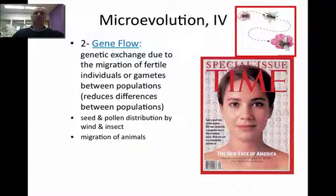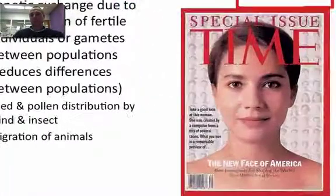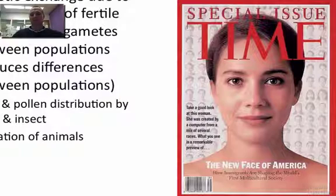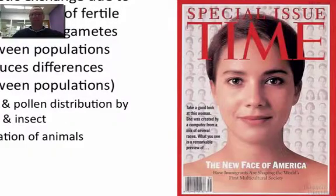The next thing is gene flow. Gene flow simply happens when animals migrate in and out of the population and they carry their alleles with them or not. There's a picture here from Time Magazine, which took all the allele possibilities of all the people that have immigrated into the United States. This person is a combination of all those alleles — called the new face of America — a computer-generated form of what a person might look like.